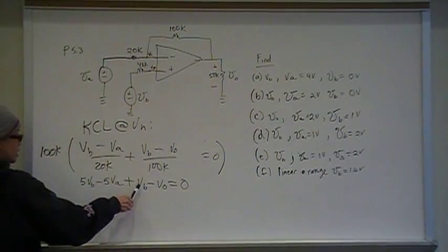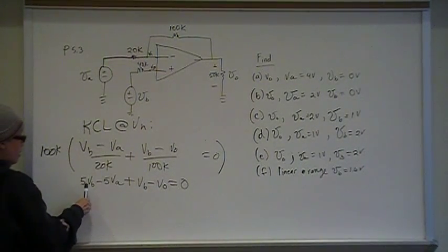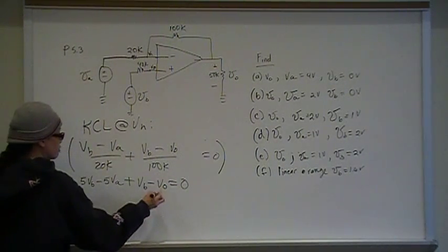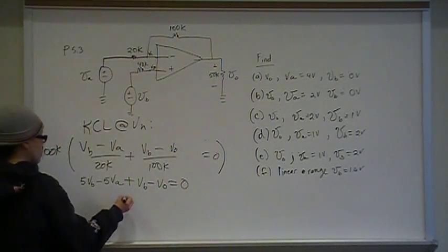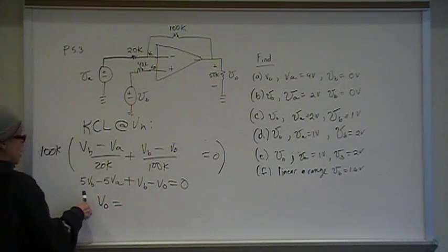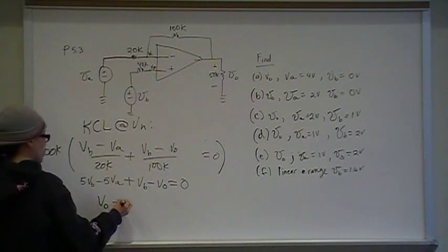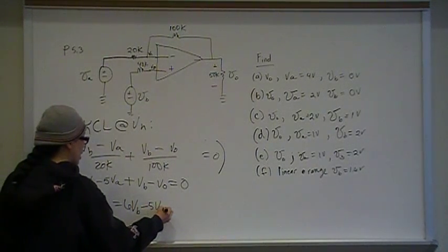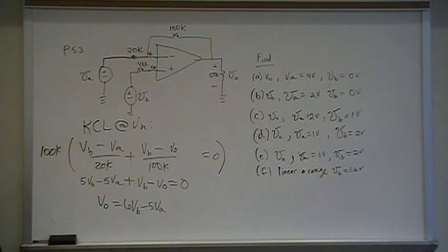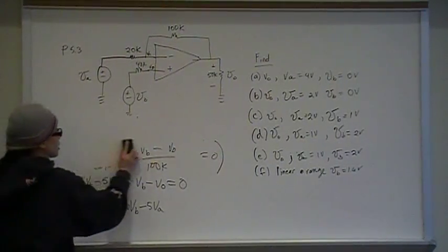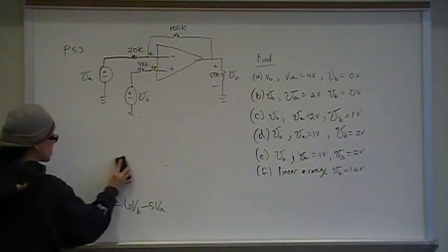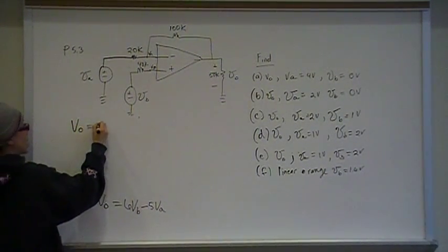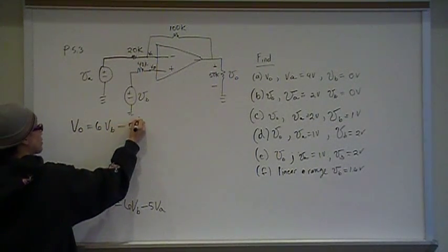I can combine VB, 5 VB and VB. And I have a negative Vout here, so I'm just going to move it over to be positive Vout. So Vout then is equal to 6 VB minus 5 VA. That is a relationship between Vout, VB and VA. Let's put that general equation up here and just start plugging in values.